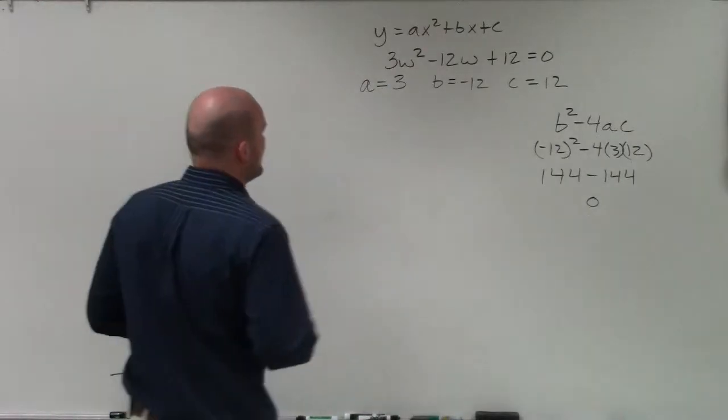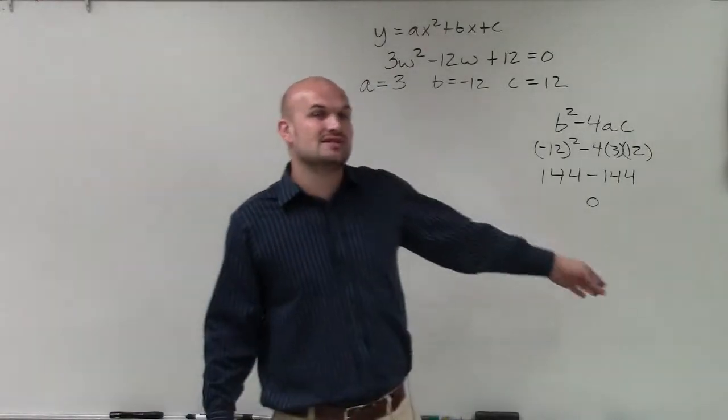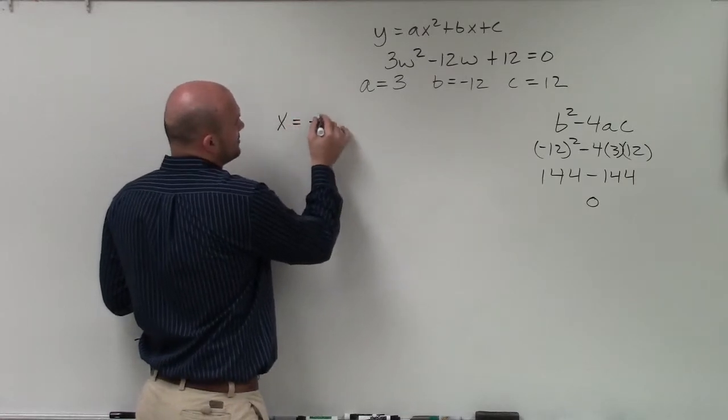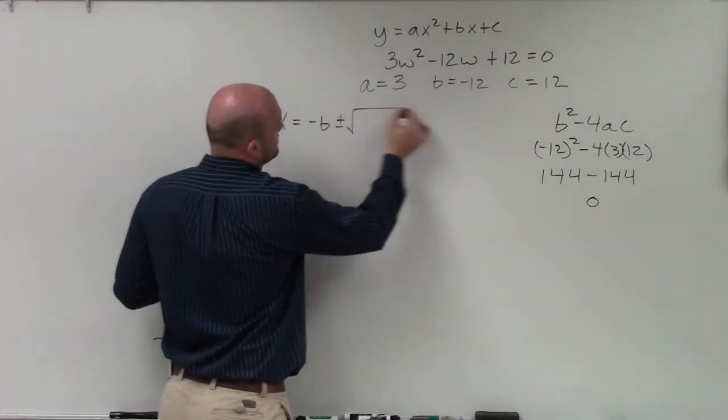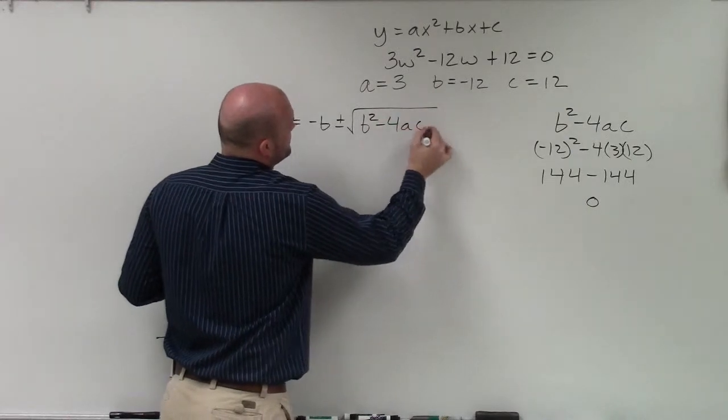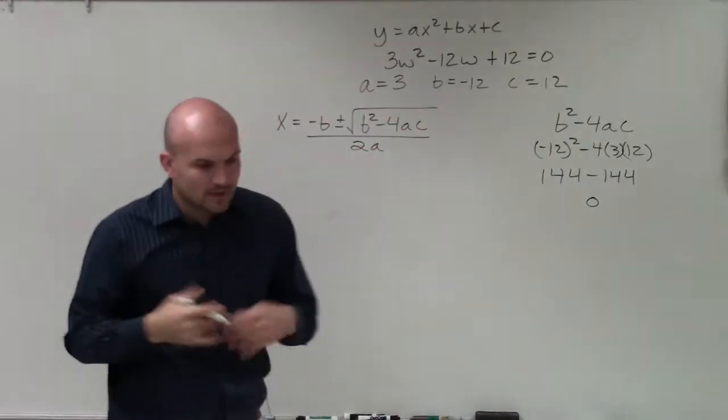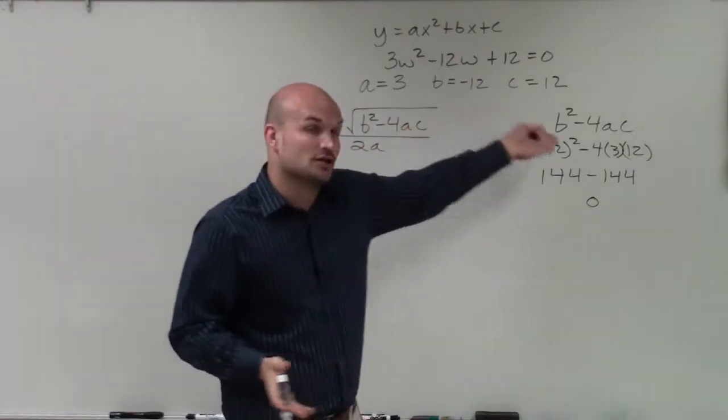So let's go to the quadratic formula and see why, when the discriminant equals 0, we only have one real solution. The quadratic formula: x = (-b ± √(b² - 4ac)) / 2a. As you notice, the discriminant is all under the root.